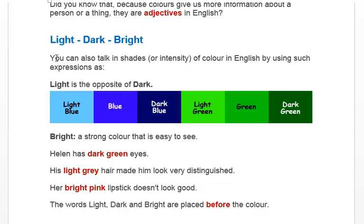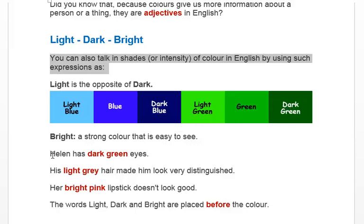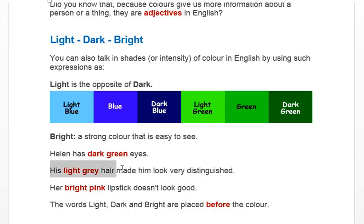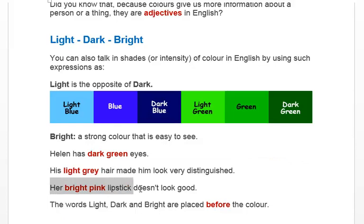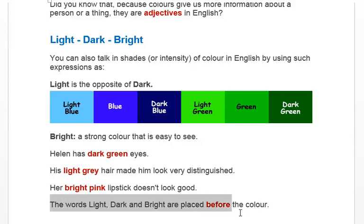You can also talk about shades or intensity of colour in English by using expressions like light blue, blue, or dark blue, and light green, green, or dark green. For example: 'Helen has dark green eyes.' 'His light grey hair made him look very distinguished.' 'Her bright pink lipstick doesn't look good.' The words light, dark, and bright are placed before the colour.